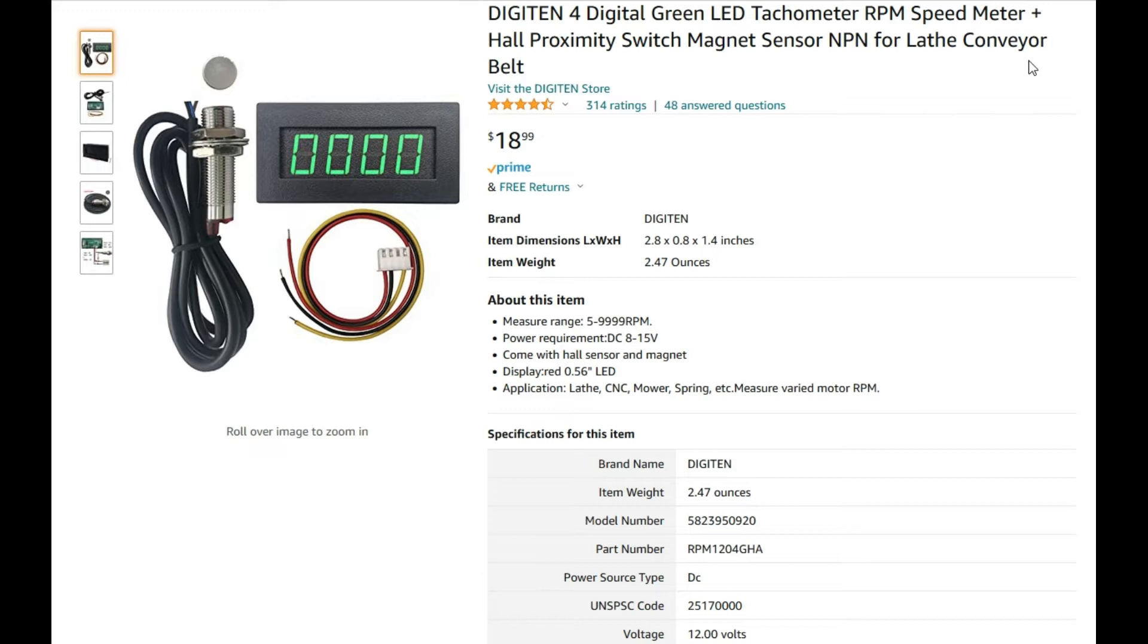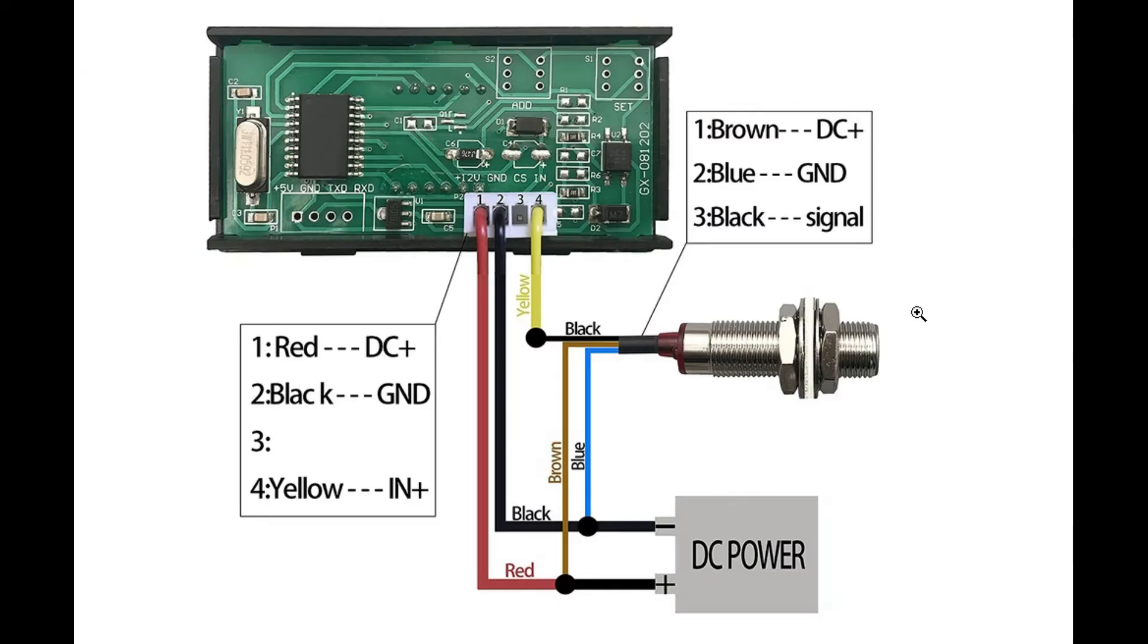If you search the internet, particularly on Amazon or eBay, you will probably find this particular tachometer, which is the one that I prefer. It comes in different colors: red, green, and blue, and I've used all colors on my different machines. Here's the hookup diagram. It's very easy to install, so let me show you some details about that.